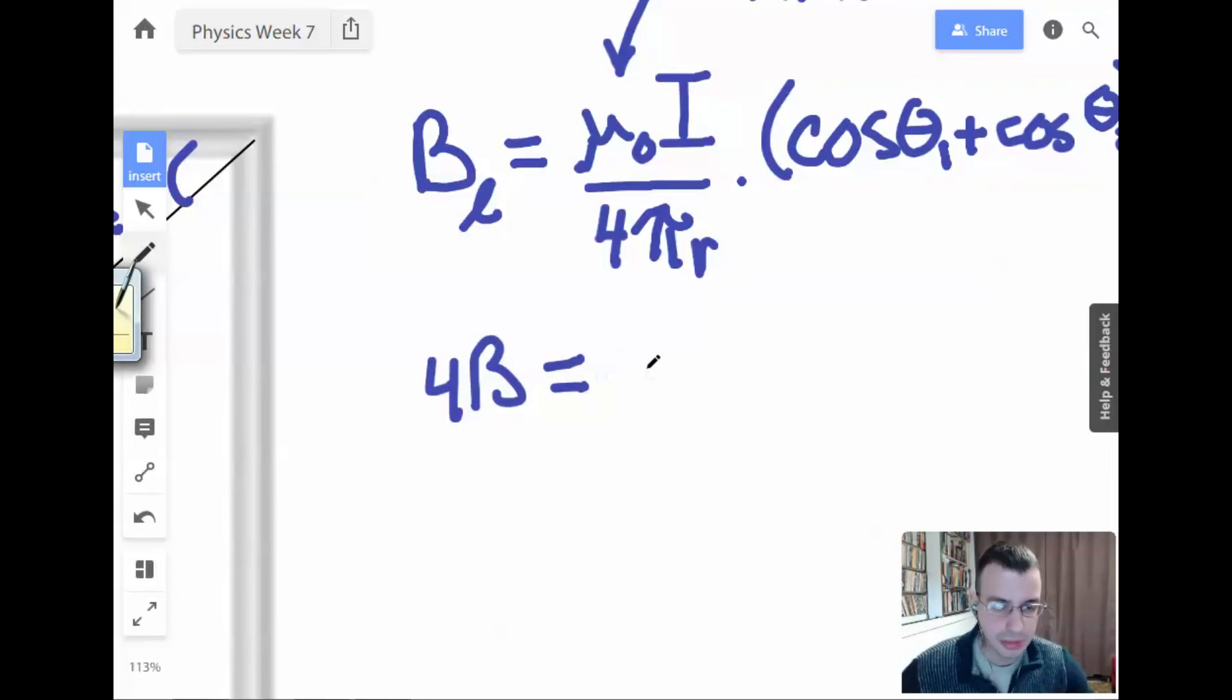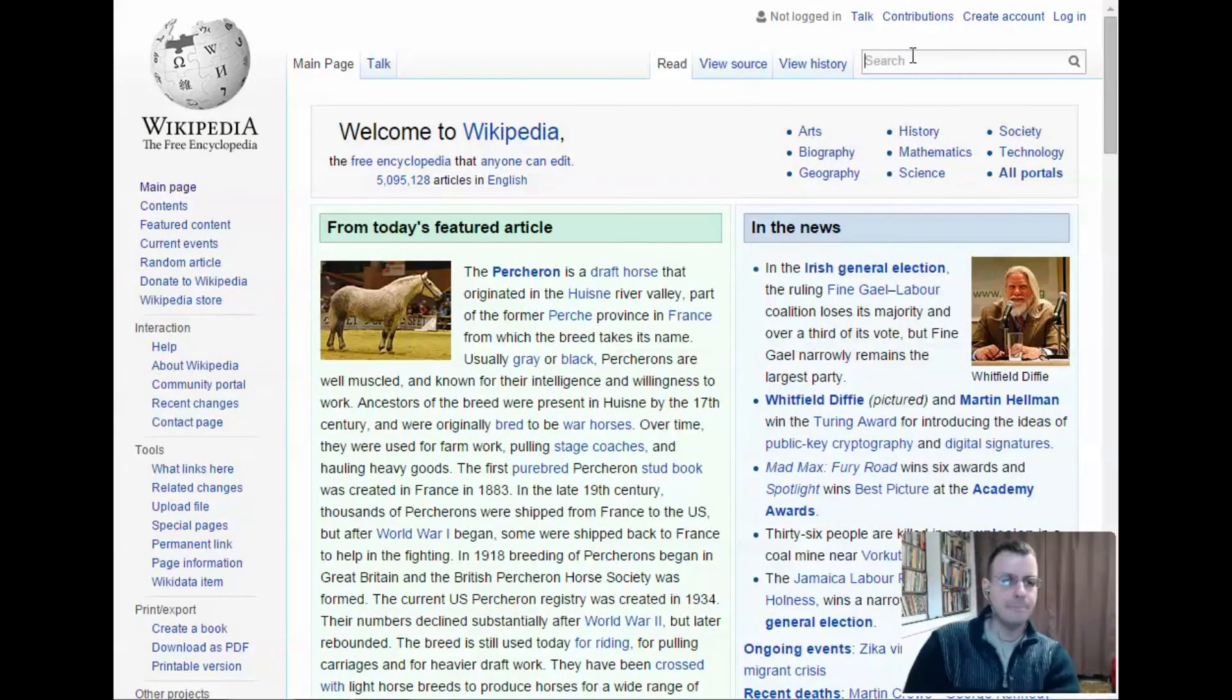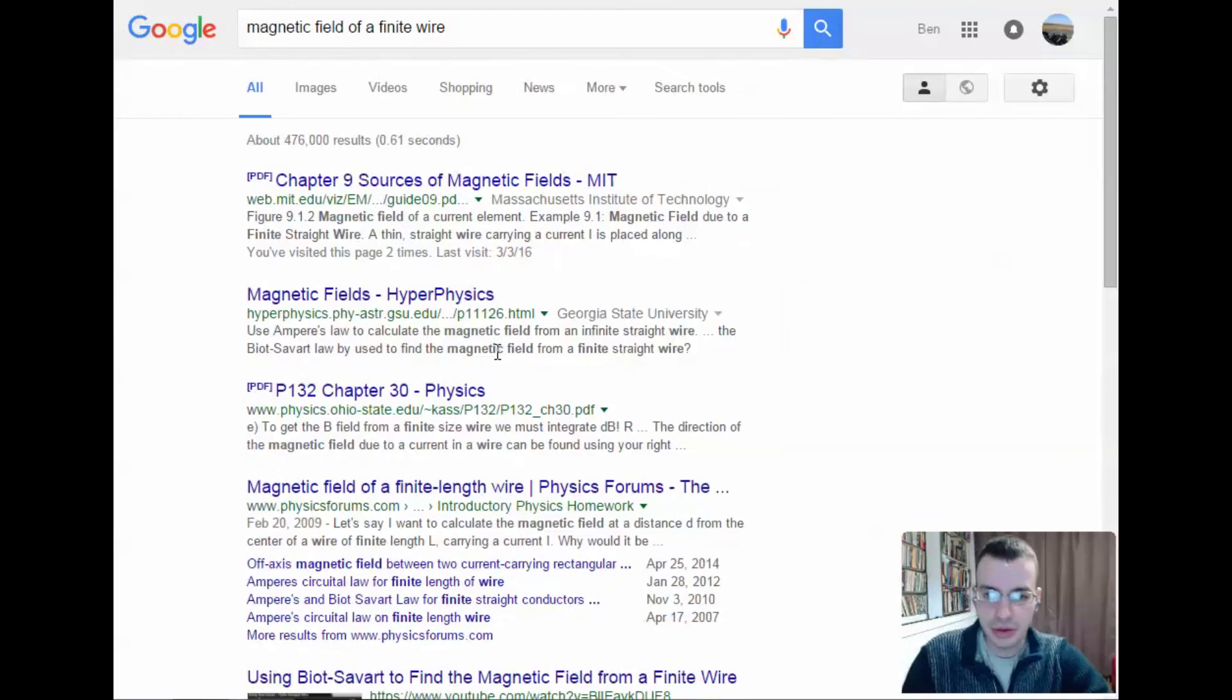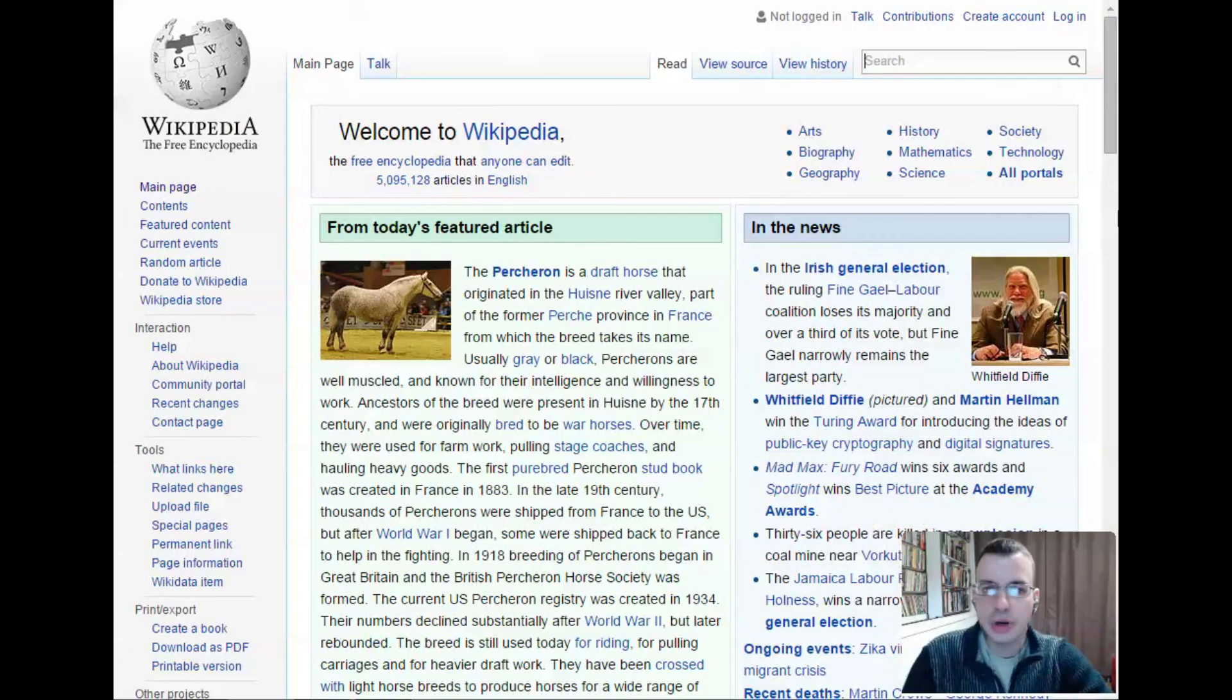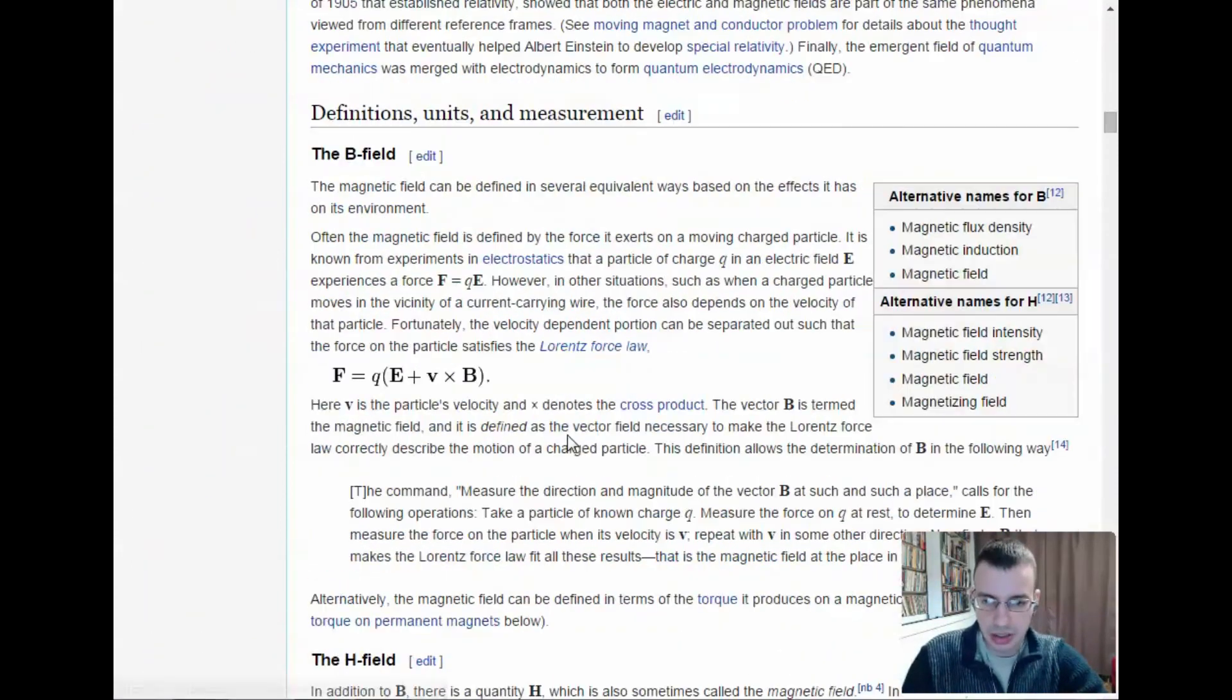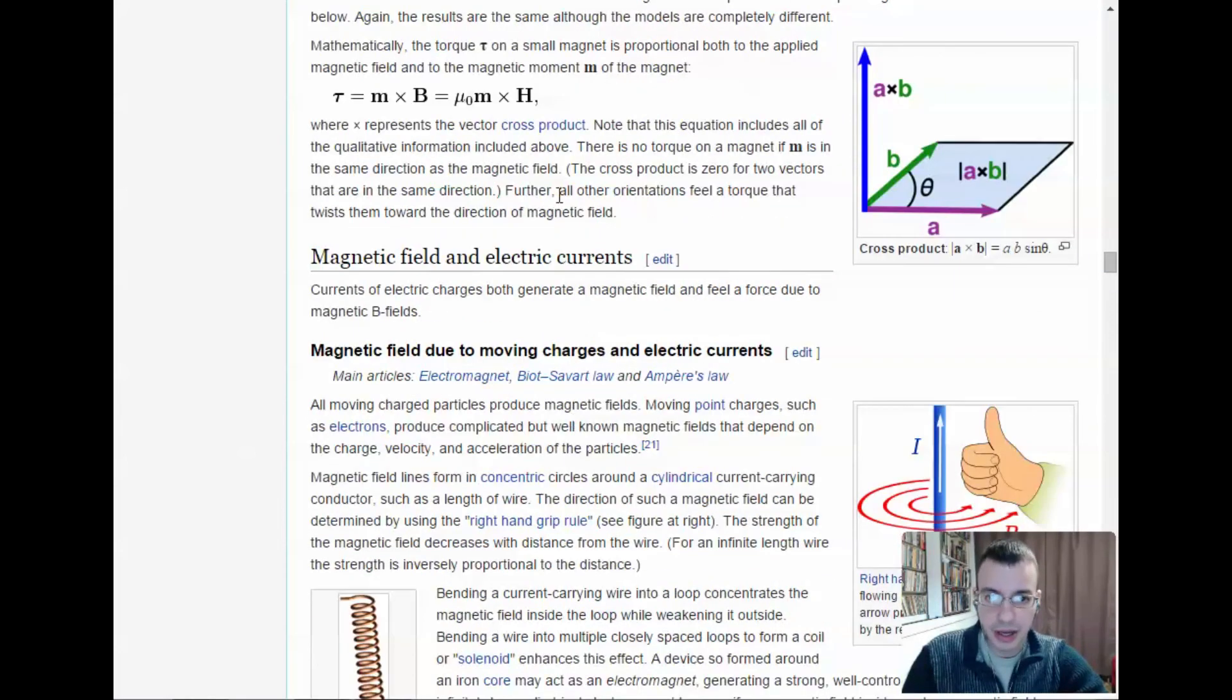We're going to have 4B because we have four lines all contributing the same amount. We have mu nought, and I'm going to write that as 4 pi times 10 to the negative 7th. Is it 4 pi? I think it's 4 pi. Let me Google magnetic field to a finite wire and see what pops up. Let's check permeability. Aha. Vacuum permeability: 4 pi times 10 to the negative 7th. Perfect.